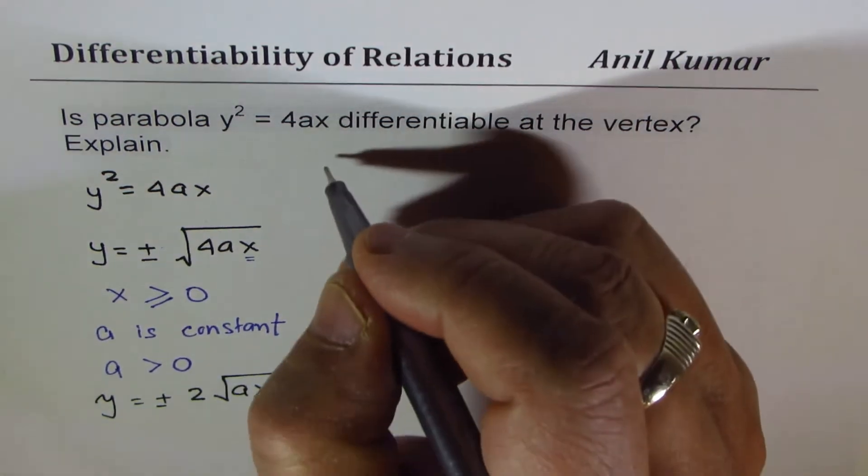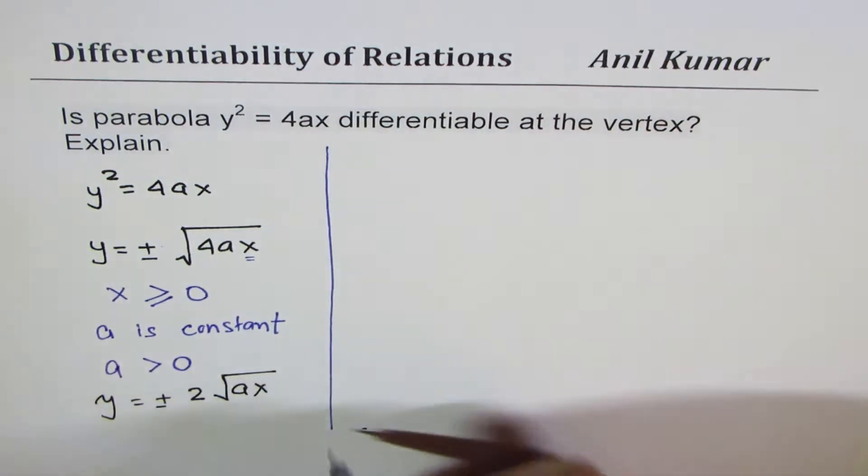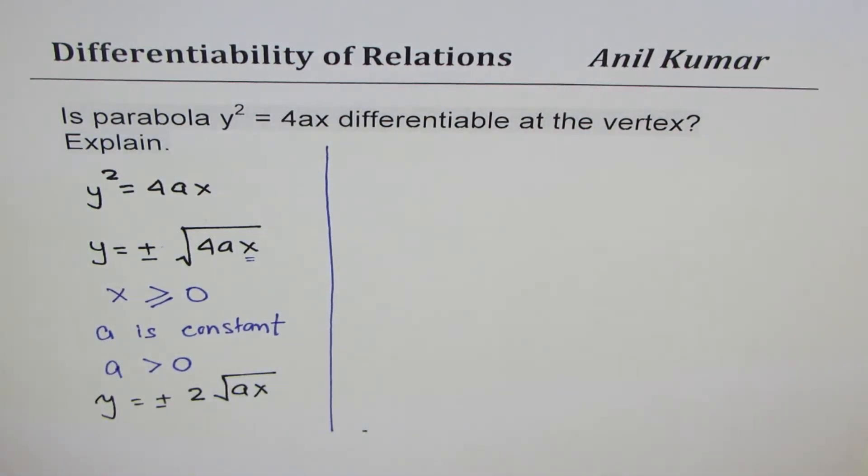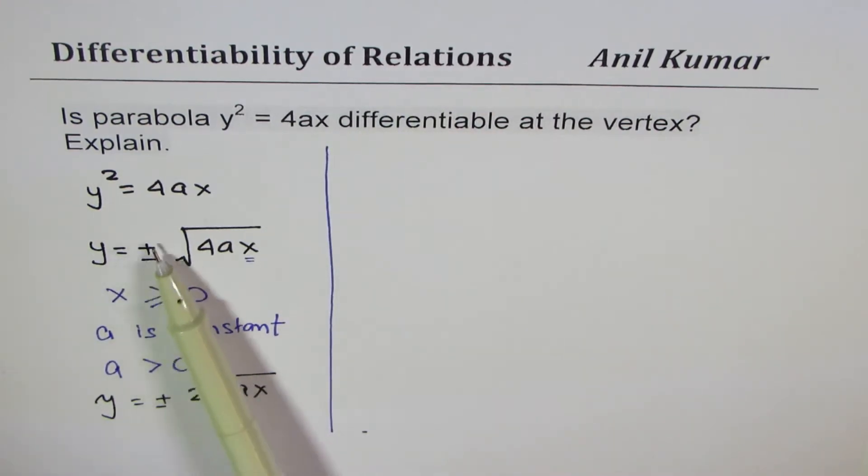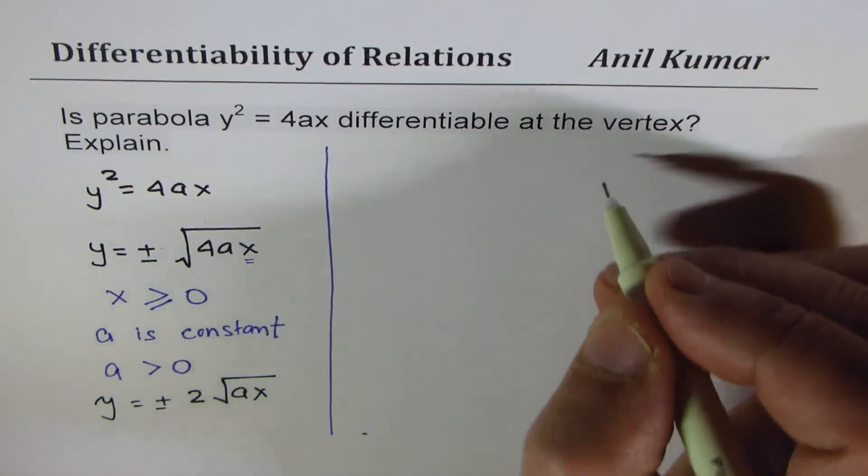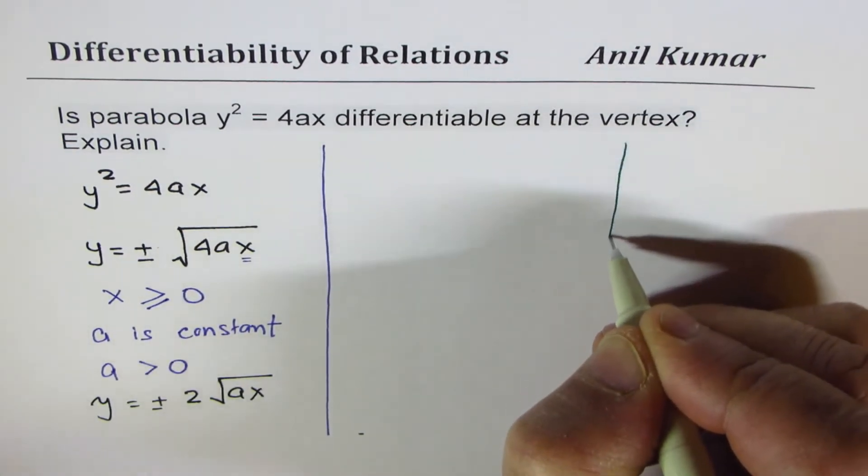But the key idea here is that the relation given to us is not a function. That's why I've written the word 'relation' here, because of these plus and minus values we can note that it is not a function.